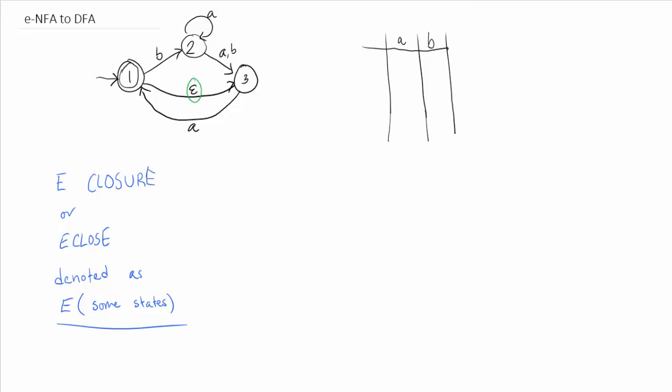So the first thing we're doing is we're getting the e-closure of the initial state. Always, always, always the e-closure of just the initial state. So the e-closure is essentially just which states can we have just epsilon transitions on. So if we're getting the e-closure of the initial state, then it will always be itself.